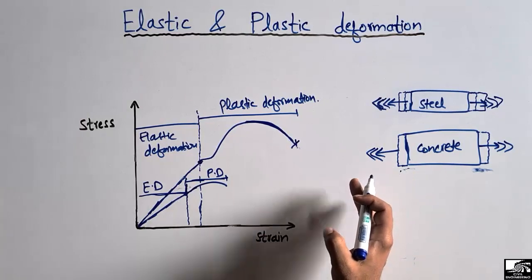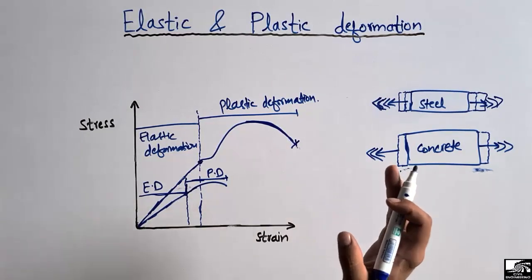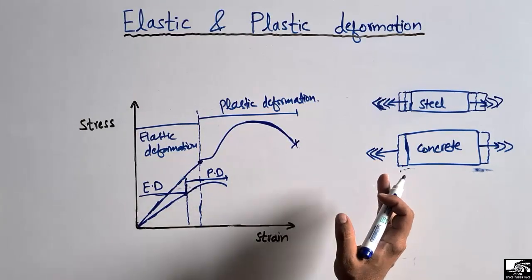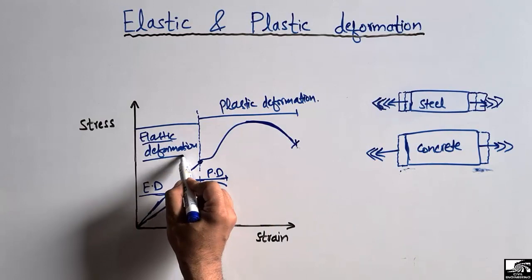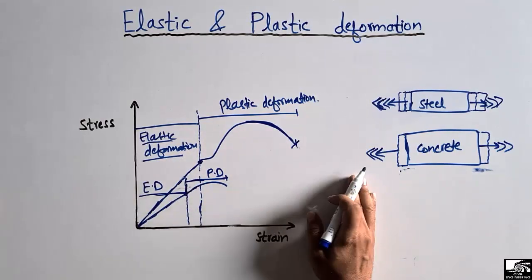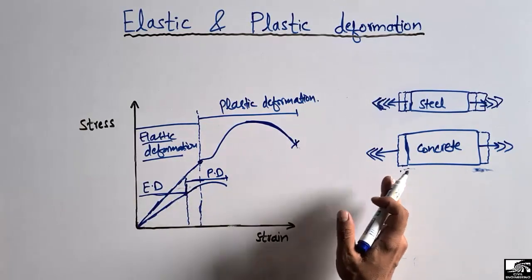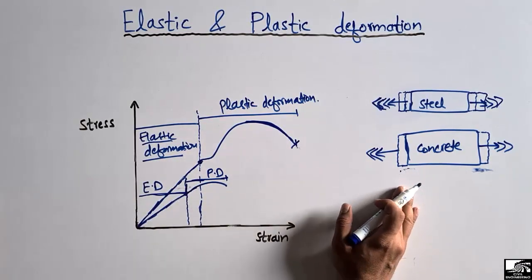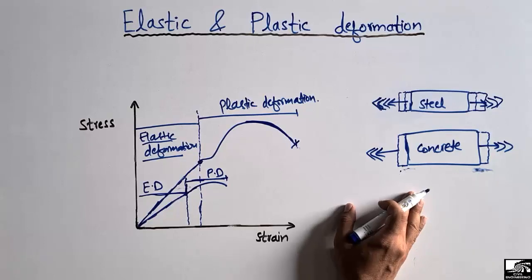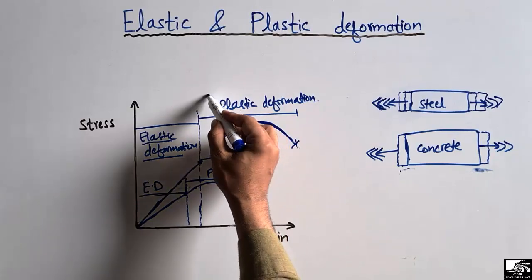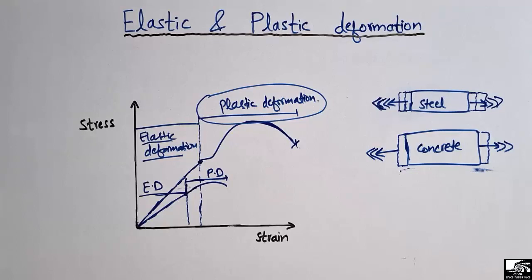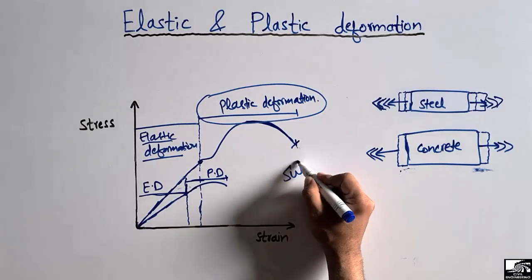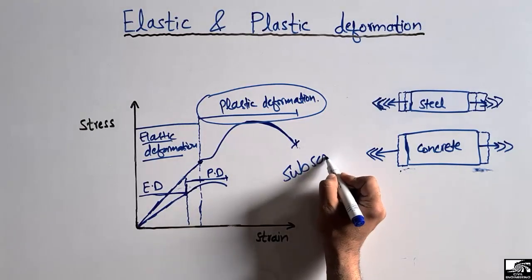Basically, when the material returns to its original position after removing the applied load, this deformation is known as elastic deformation. When the material does not come back to its original position after removing the applied load, this deformation is known as plastic deformation. Hope you guys understand the main difference — don't forget to subscribe to our channel for more civil engineering videos.